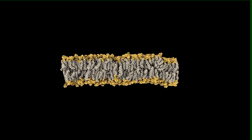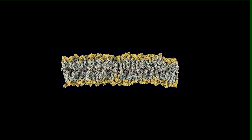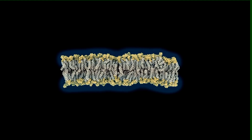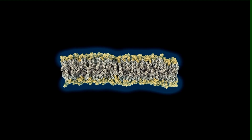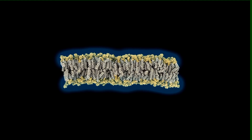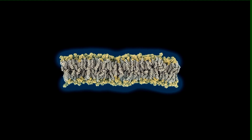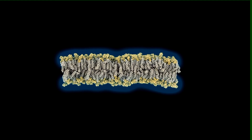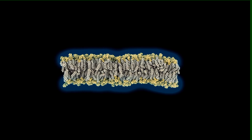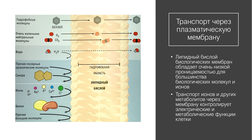The head and tail groups in membrane lipids are the right size to line up side by side, forming the sheets of membrane that surround the cell and divide its interior into compartments.